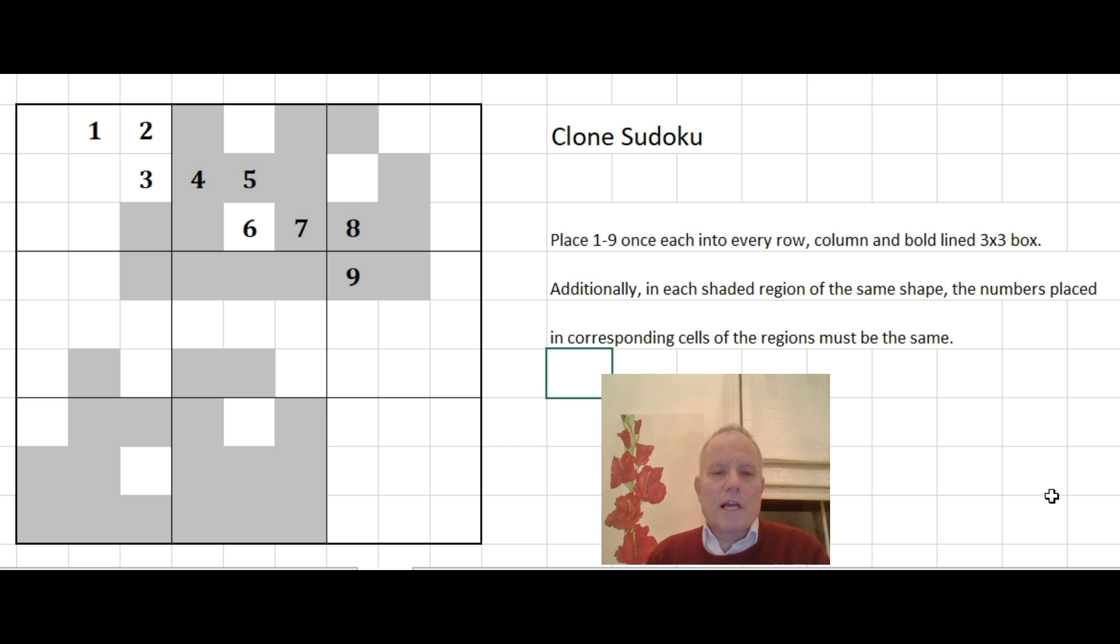I do urge you to have a look at this puzzle but do learn the rules here. Now what we've got is a puzzle in which again as usual we use the numbers one to nine in every row, column and box, but also we've been given these two grey shapes in the grid and the two grey shapes are clones.